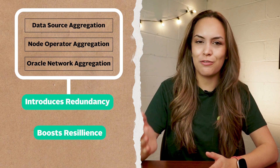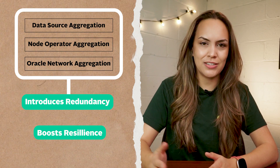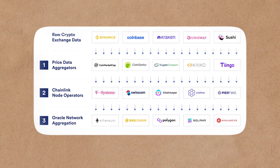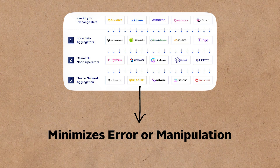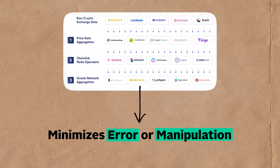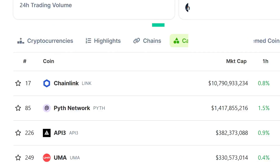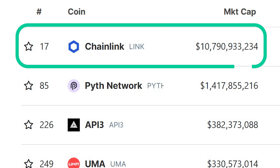Incorporating these layers of aggregation introduces redundancy and boosts the overall resilience of the price feed. This multi-layered approach minimizes the impact of any single source of error or manipulation, ensuring a reliable and tamper-proof price reference point for DeFi applications.